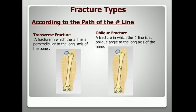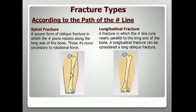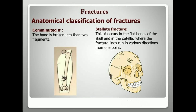According to the path of the fracture line, there are several types. A transverse fracture has a line perpendicular to the long axis of the bone. An oblique fracture has a line at an oblique angle to the long axis. A spiral fracture is a severe form of oblique fracture where the plane rotates along the long axis, occurring secondary to rotational force. A longitudinal fracture runs nearly parallel to the long axis of the bone and can be considered a long oblique fracture.